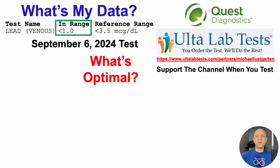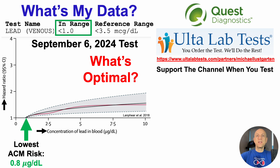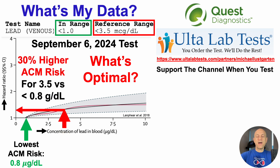Which raises the question: what's optimal? We'll take a look at a plot for all-cause mortality risk, shown here on the y-axis, plotted against the concentration of lead in blood on the x-axis. Lowest risk of death for all causes was associated with plasma lead levels less than 0.8 micrograms per deciliter. So I seem to be in good shape at less than 1 microgram per deciliter. Note that the reference range upper limit is less than 3.5 micrograms per deciliter — and just to highlight that the reference range is generally not what's optimal: in this study, people at 3.5 micrograms per deciliter had a 30% increased risk of death for all causes relative to people at 0.8 micrograms per deciliter.